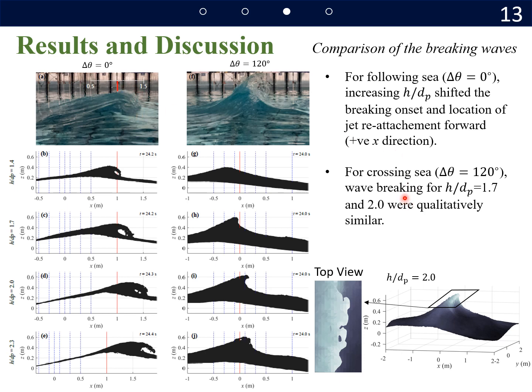And for crossing sea, wave breaking with h/dp value of 1.7 and 2.0 were qualitatively similar. Especially, wave breaking with h/dp value of 2.0 appears to reproduce some of the jet spray, as we can see here.